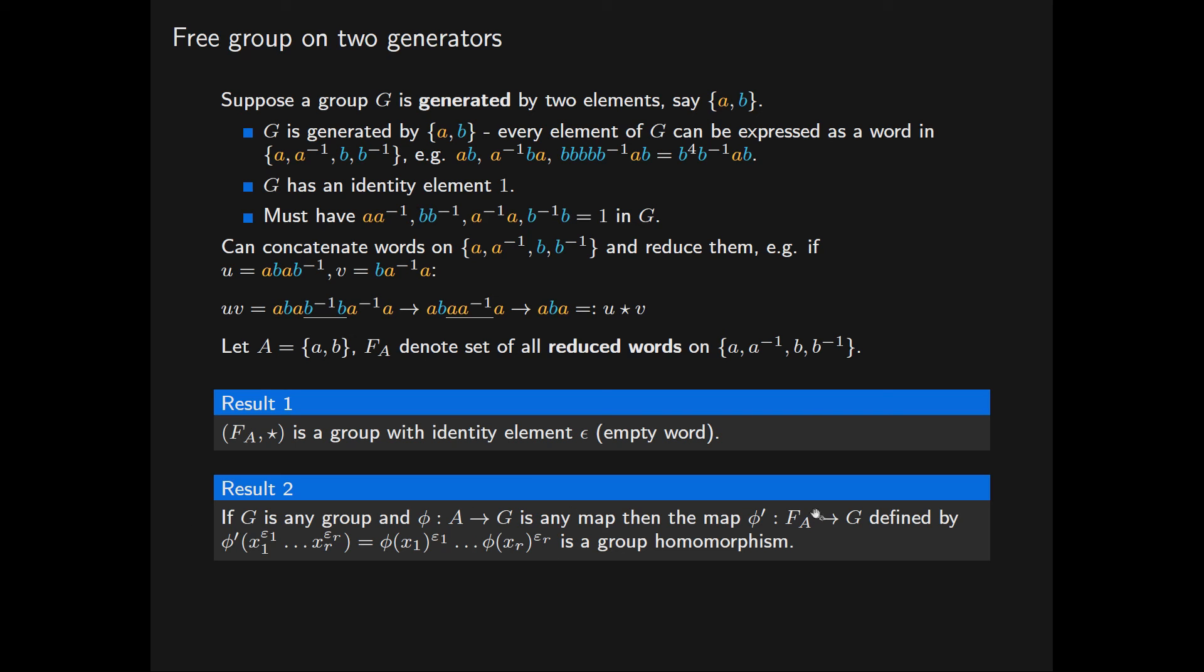Not only that, such an extension is unique. Given any map phi from the set A into a group G, it extends uniquely to give a group homomorphism from the group F(A) into G. And in fact, this result here will act as a definition for a free group that we will look at in the next part.